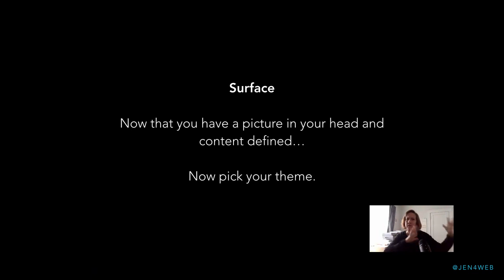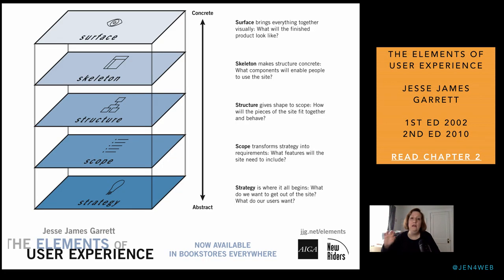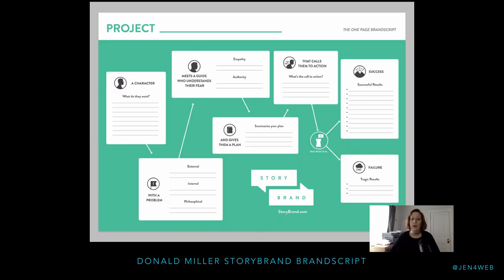Once you have that in place — you know the content, how it's organized, the problem you're trying to solve, the features and functionality needed, and you've drawn it out — now you go and look for the right template or theme for your particular system. Now you do that, and now it's not nearly so crippling a decision to make. That is Jesse James Garrett and his five planes of user experience — something I've taught for almost 20 years. Chapter two is free on his website.